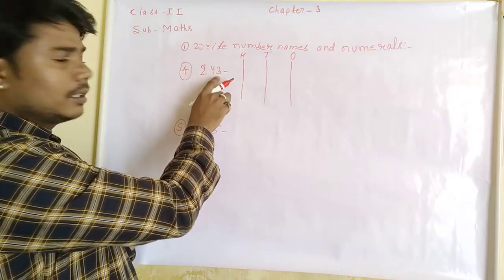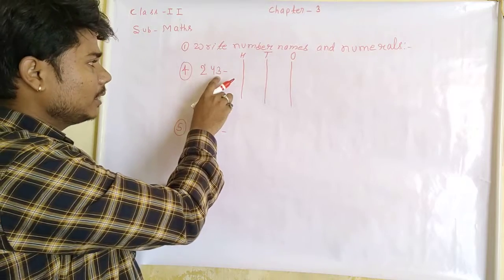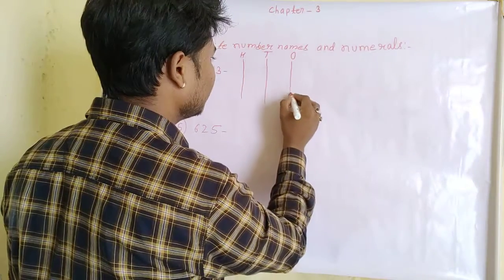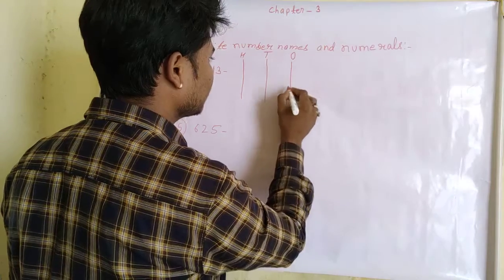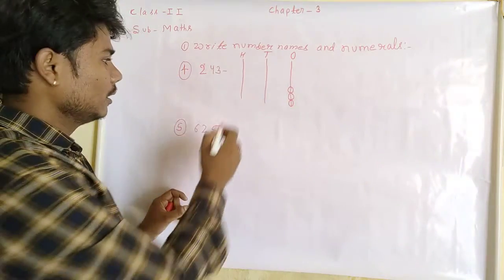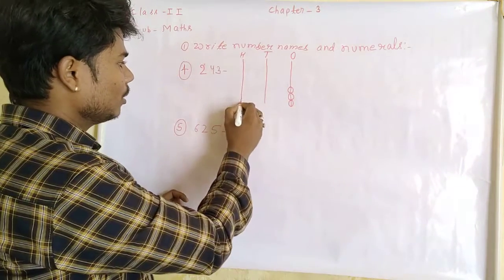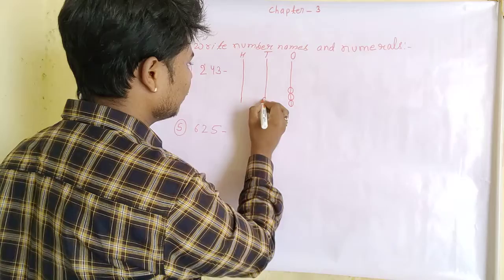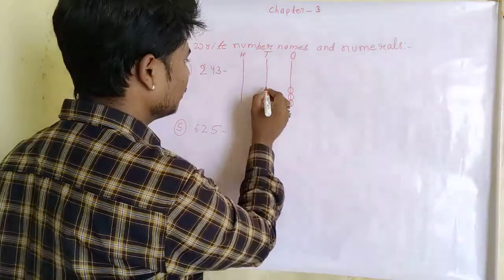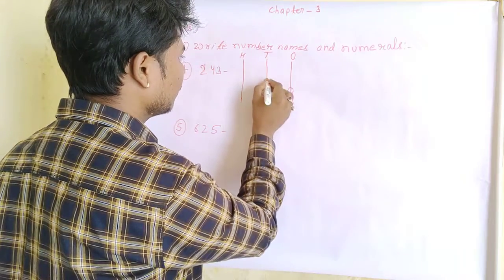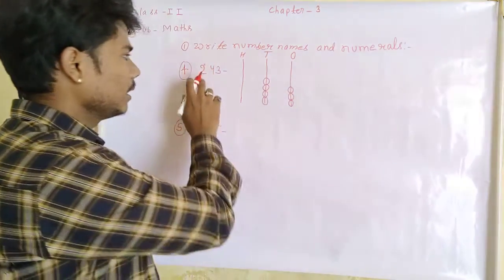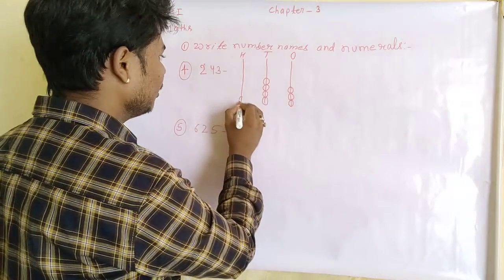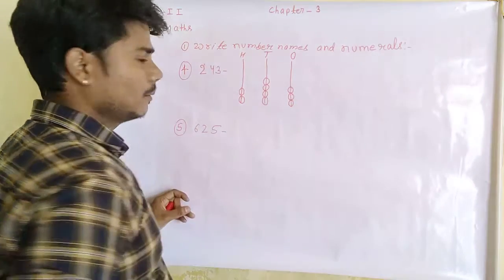The number in the ones place is 3, so we have to draw 3 small circles — also called bits. Now the number in the tens place is 4, so we have to draw 4 small circles: 1, 2, 3, 4.